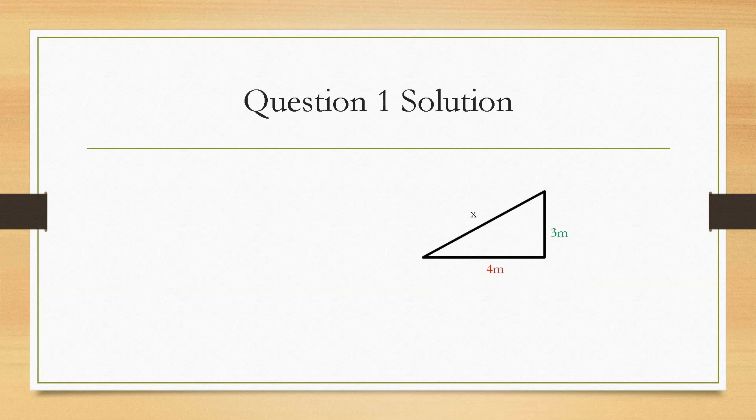So, if we take a look at this solution, we have the same triangle as before and the equation that we've seen earlier. However, we've changed the colours of the numbers to represent the letters that we're going to substitute in. So, a in this case being 4 and b being 3.